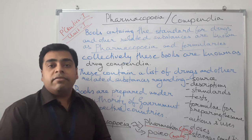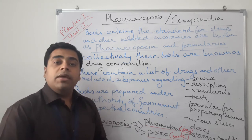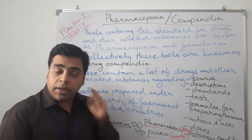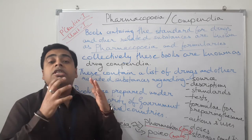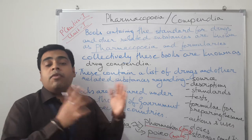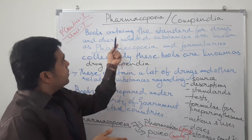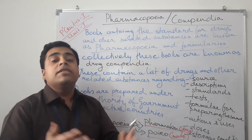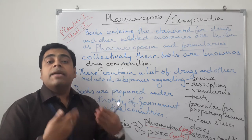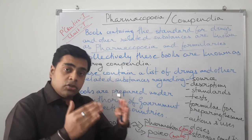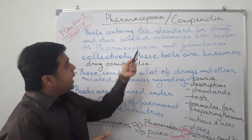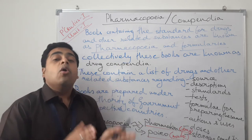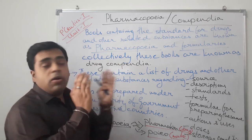The leading countries have their pharmacopoeia — in India we have the Indian Pharmacopoeia, in Great Britain they have the British Pharmacopoeia, and in the United States of America they have the United States Pharmacopoeia. These are official publications published by the government of that particular country. The books containing standards for all drugs and allied substances — the standards written about them — they come from the government.